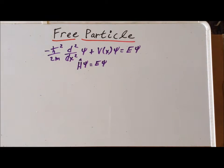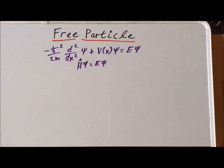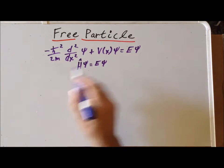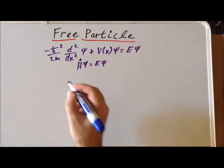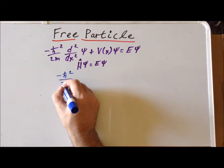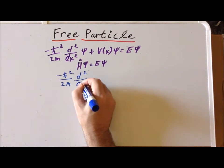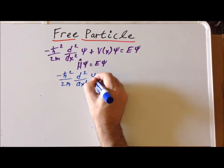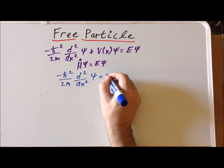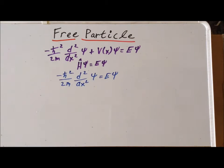In the case of the free particle, we have no potential. Since there's no potential energy acting on the particle, it's completely free to roam wherever it likes. In that case, we can rewrite the Schrödinger equation more succinctly as minus h-bar squared over 2m times the second derivative with respect to x of psi equals E times psi. Here we have just the kinetic energy term.